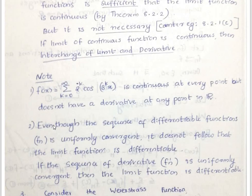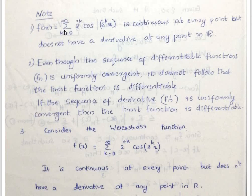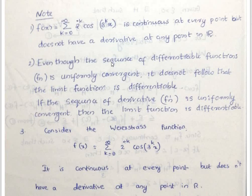Consider the function f(x) = sigma k=0 to infinity of 2^(-k) cos(3^k x). This is from our first module. This function is everywhere continuous but nowhere differentiable — it is the Weierstrass function. Even though it is a uniform limit of a sequence of differentiable functions fn, it does not follow that the limit function is differentiable.